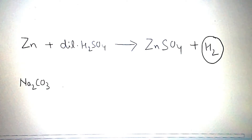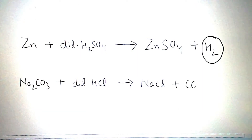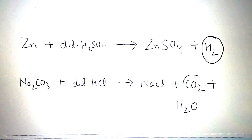Let us take another example. When sodium carbonate reacts with dilute hydrochloric acid, then it gives sodium chloride, carbon dioxide (CO2), and water. In this reaction, carbon dioxide gas is evolved.